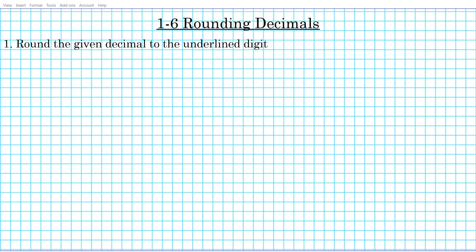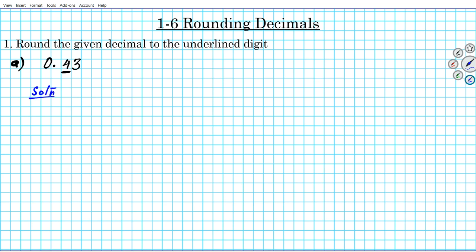The instructions for question 1 are to round the given decimal to the underlined digits. For question 1a, we have the decimal 0.43, and we have to round it to the specified decimal place — the 4. So what is 0.43 when we round it to that digit, the 4, in that number?